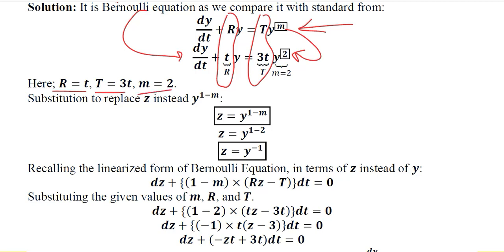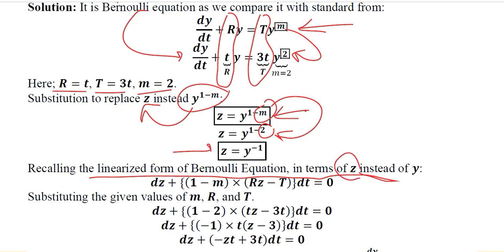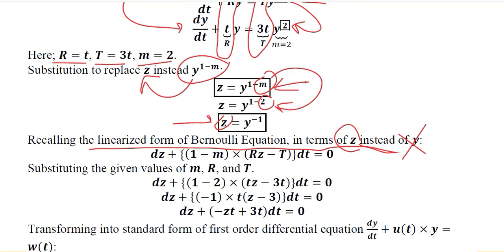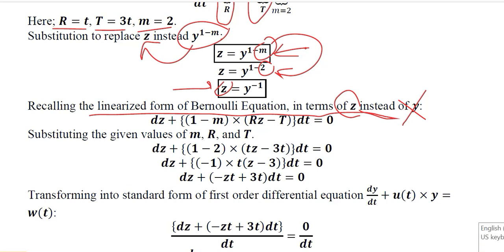If you remember, there were two substitutions. The first substitution was that we got rid of y raised to the power 1 minus m by assuming it equal to z. We substituted the value of m here, which is 2. So the value of z is equal to y raised to the power minus 1.